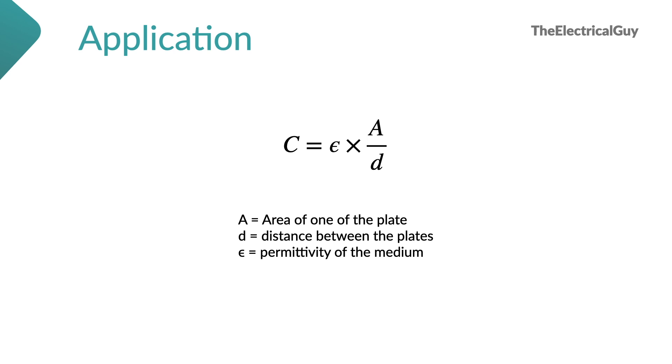Where A is the area of one plate, D is the distance between the two plates and epsilon is the permittivity of the medium between the two plates. Now as you can see permittivity can clearly affect the capacitance of a capacitor.